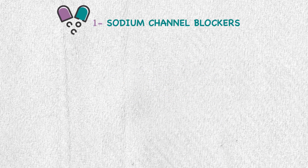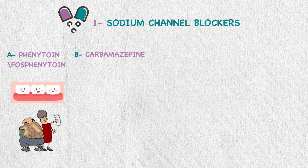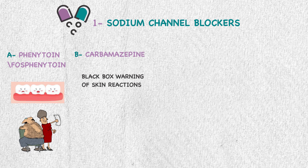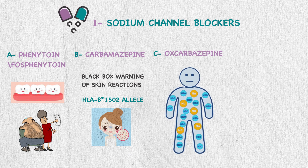First, sodium channel blockers include phenytoin and fosphenytoin; side effects include gingival hyperplasia and hirsutism. Second, carbamazepine has a black box warning for skin reactions, especially in patients with the HLA-B*1502 allele, who have a greater risk of Stevens-Johnson syndrome. Third, oxcarbazepine may cause hyponatremia.